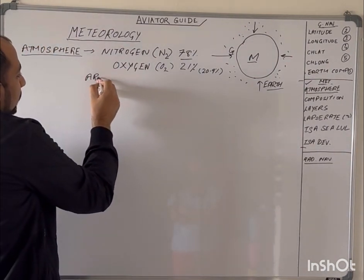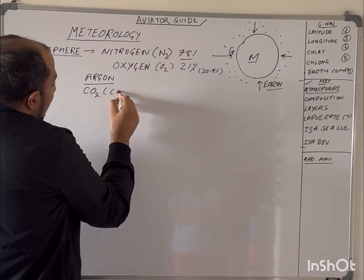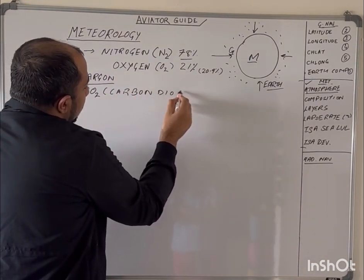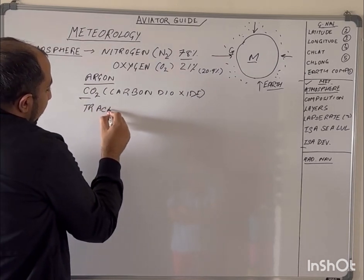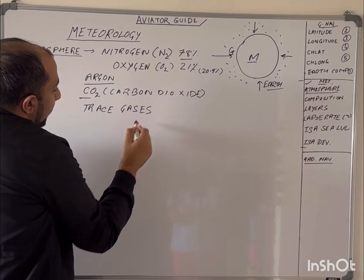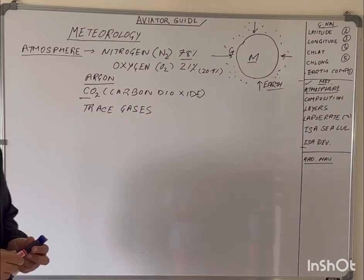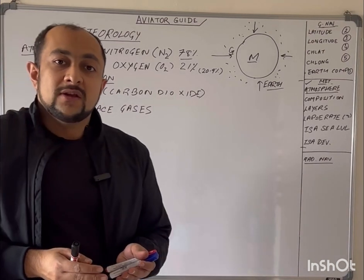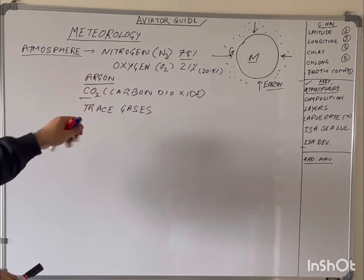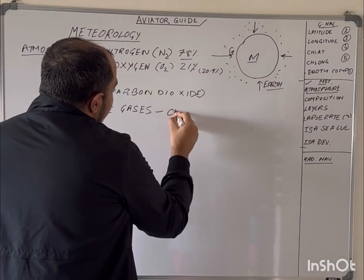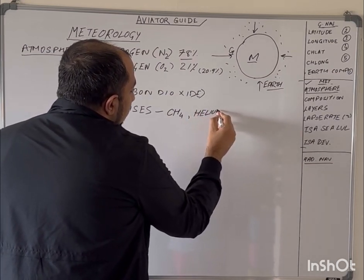These two major gases together account for about 95 to 99% of the atmosphere. The rest is Argon, Carbon Dioxide (CO2), and then there are trace gases. Among these trace gases is methane, which we write as CH4, and many other gases like Helium and others.